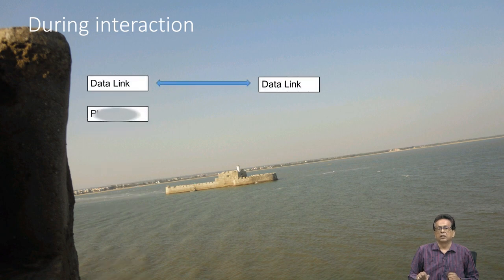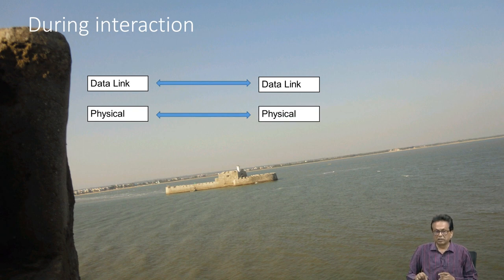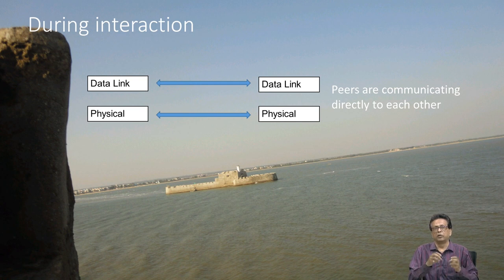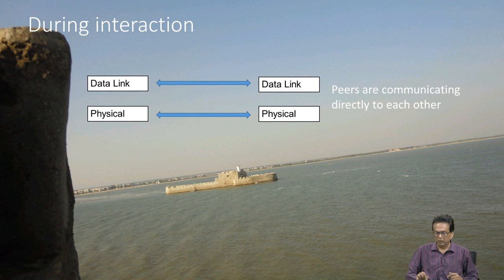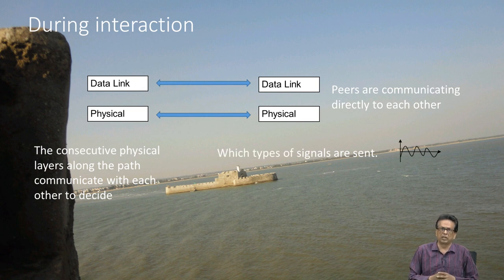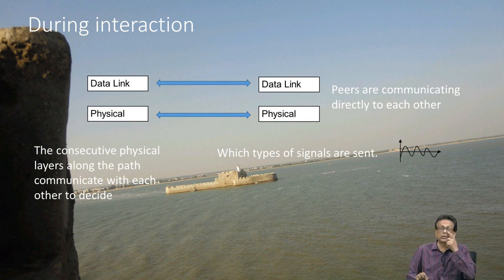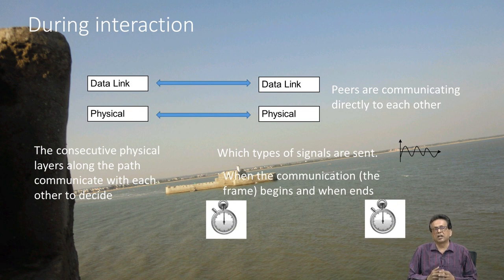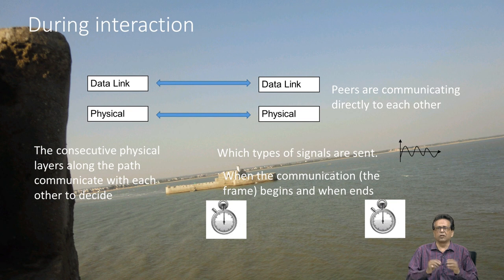During interaction, data link and physical layers are communicating and they have to decide a few things — two very critical things. First, which type of signals are to be sent, and that is called the coding system — that is not an easy job; the entire data communication system is designed to deal with this problem. Second, when the communication starts and when it ends. There are two different types: synchronous, where they are synchronized on time, and asynchronous, where there is a starting part which indicates to the receiver that a frame is coming.